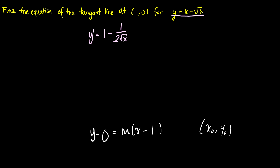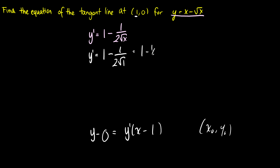This y prime is the slope — this is our m value. We need to plug in our x value, which is x equals 1. So y prime equals 1 minus 1 over 2 times the square root of 1, which equals 1 minus 1/2, which equals 1/2. So our slope is 1/2.